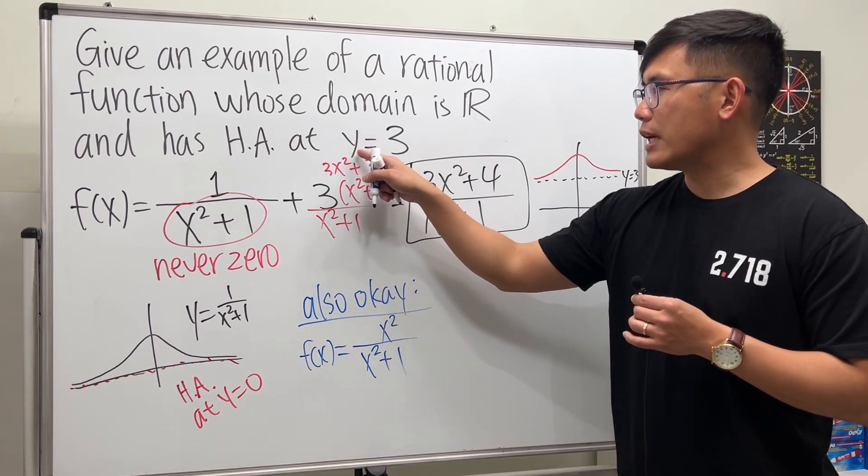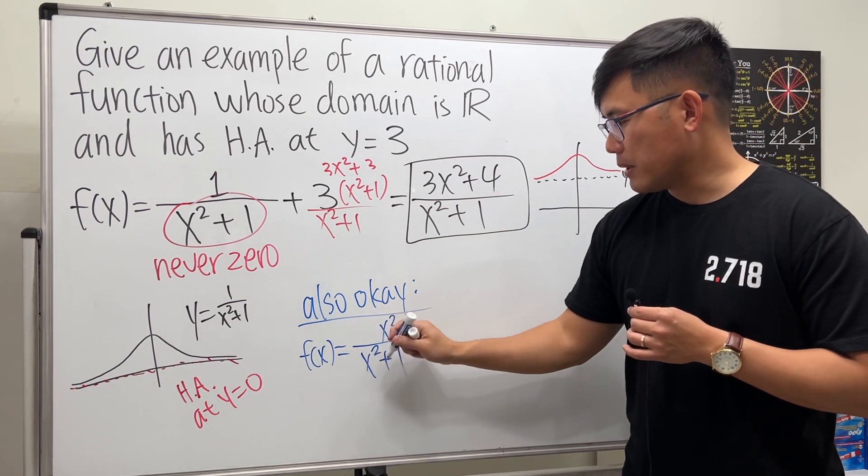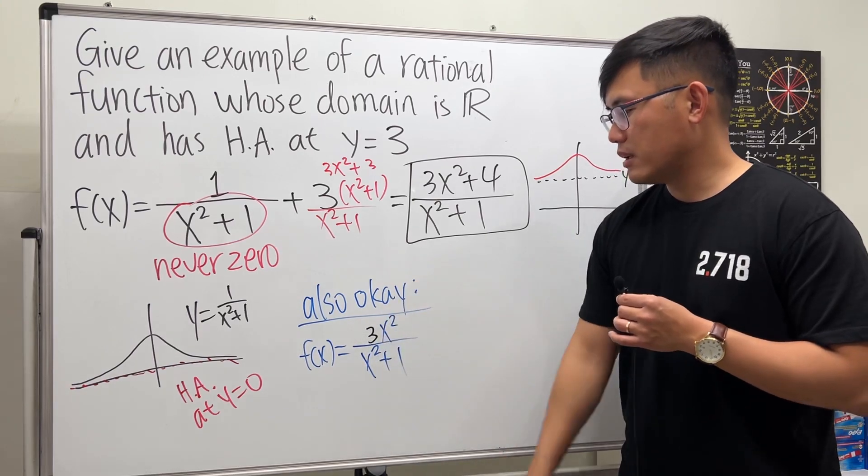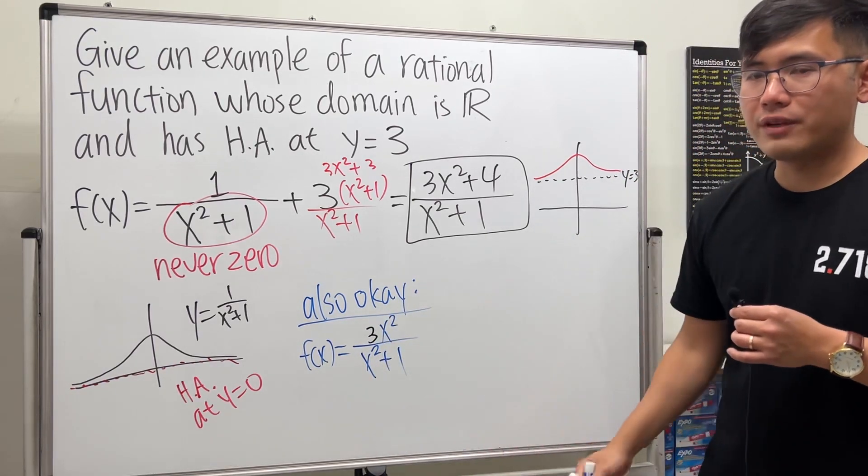Then here you can just divide it out, you just get 1, but you want the horizontal asymptote to be 3. You just need to multiply this by 3, so I'll put a 3 right here. This is also okay.